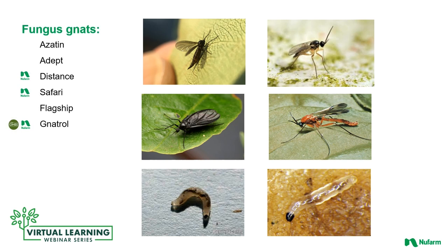Starting in the root zone, fungus gnat larvae are our worst pest and can be difficult to control. You need to recognize the adults — the winged forms that move from plant to plant. Systemic insecticide drenches with a long residual like Safari, plus an OMRI-certified biological like Natural, will control both adults and larval stages. Distance, an insect growth regulator, prevents larval stages from maturing through to adults, breaking the life cycle. Primary products include Azitin, Adept, Distance, Safari, Flagship, and Natural.